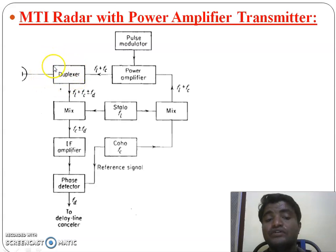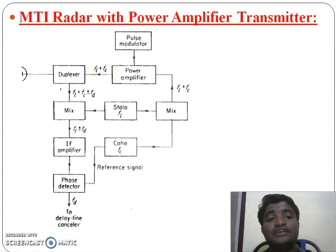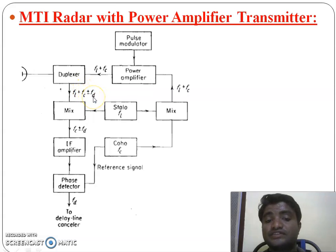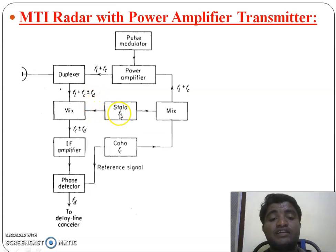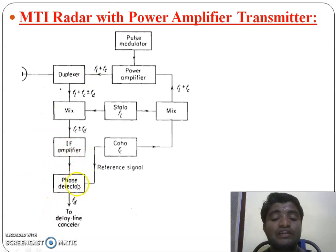A single antenna is used for both transmission and reception, so a duplexer is used. The duplexer routes the echo to the receiver, not to the transmitter. The transmitted signal frequency is FL + FC, and the received signal frequency is FL + FC ± FD, due to the Doppler frequency shift from target motion. The receiver mixer has two inputs: FL + FC ± FD and FL. The mixer generates a difference frequency of FC ± FD. After the mixer, an IF amplifier passes the intermediate frequency. The phase detector then provides the difference in phase between the two inputs and produces the Doppler frequency shift FD, used to identify moving and stationary targets.